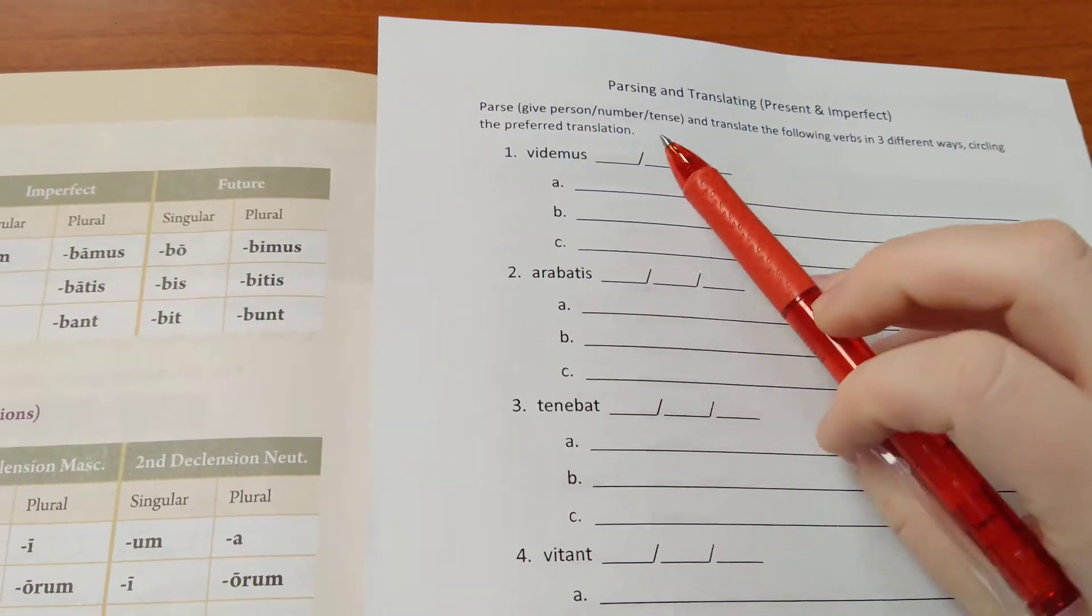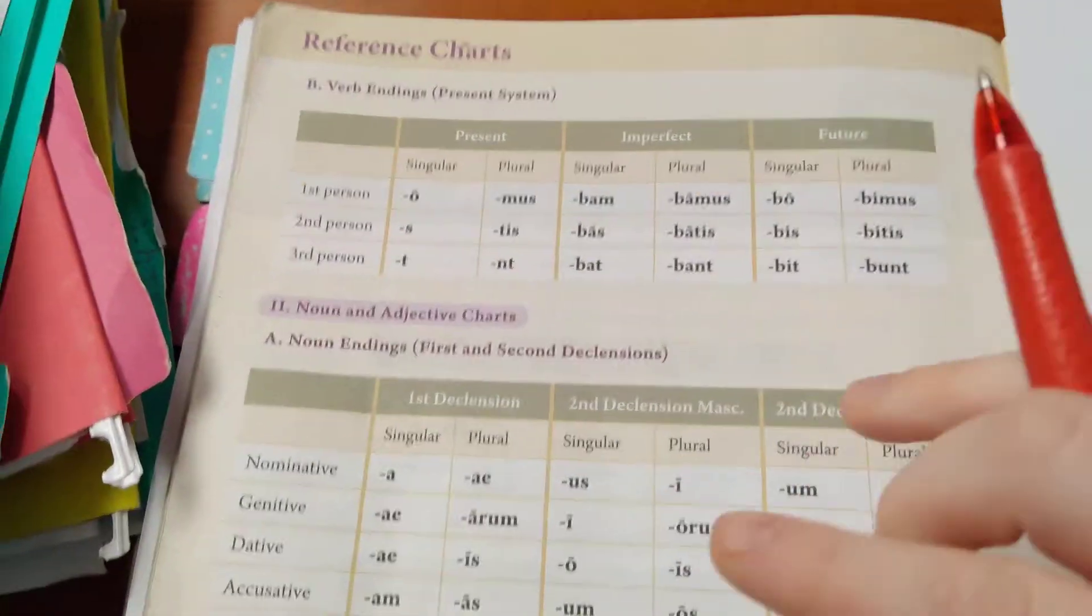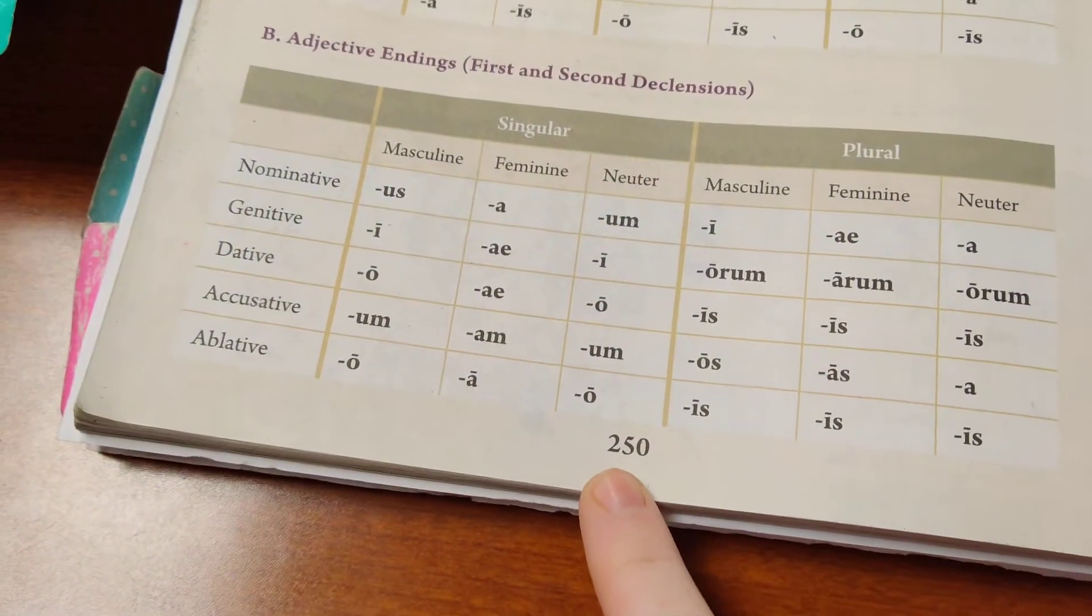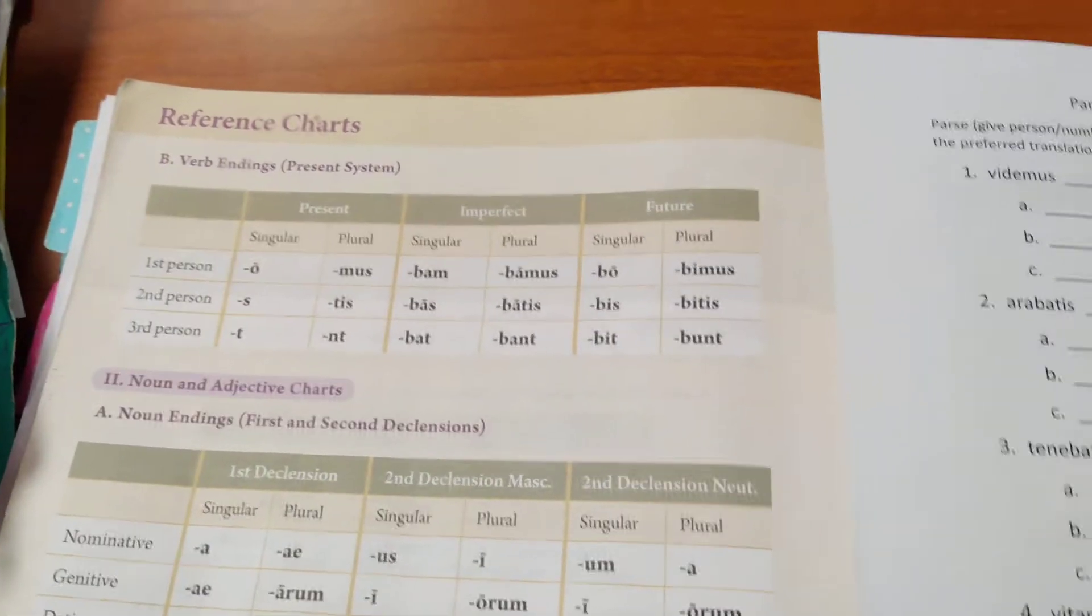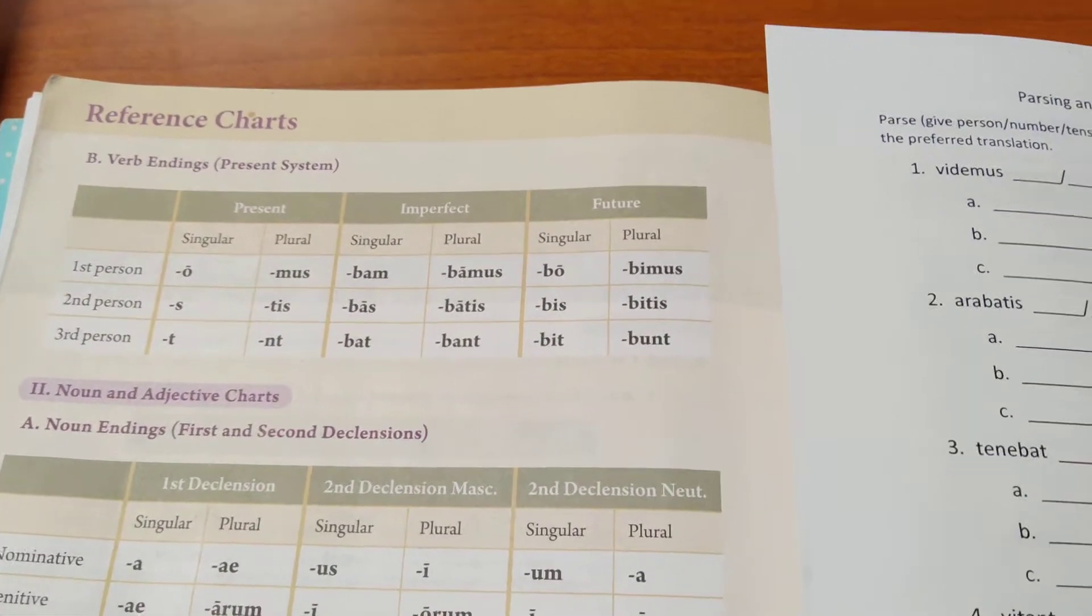You're going to need your worksheet, and if you look in your book on page 250, there's a nice quick easy reference for your chart that you're going to need - your two different charts, present and imperfect.